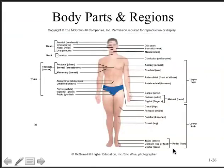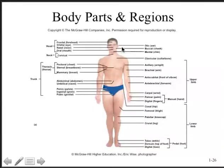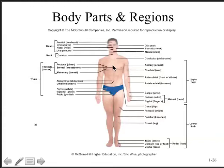Looking at a map of the body from the anterior aspect, starting at the top: the head or cephalic region includes the frontal region (forehead), orbital region (eyes), nasal region (nose), oral region (mouth), otic region (ears), and buccal region (cheeks). Moving down to the thoracic region: the pectoral regions are lateral to the sternum; below the sternum is the thymus, and below that is the heart. So the sternum is superficial to the thymus and heart, and the thymus is deep to the sternum but superficial to the heart.